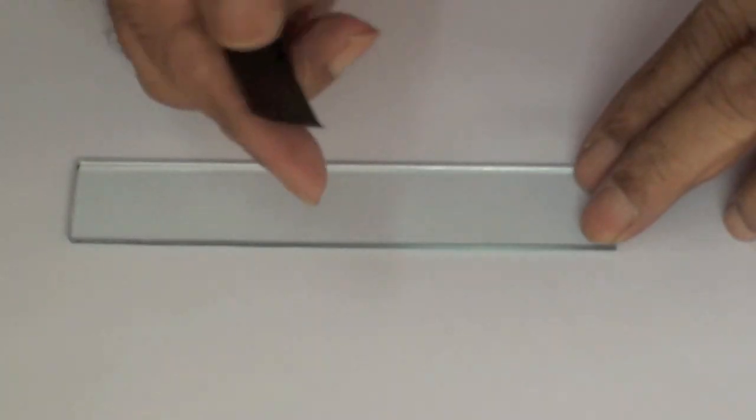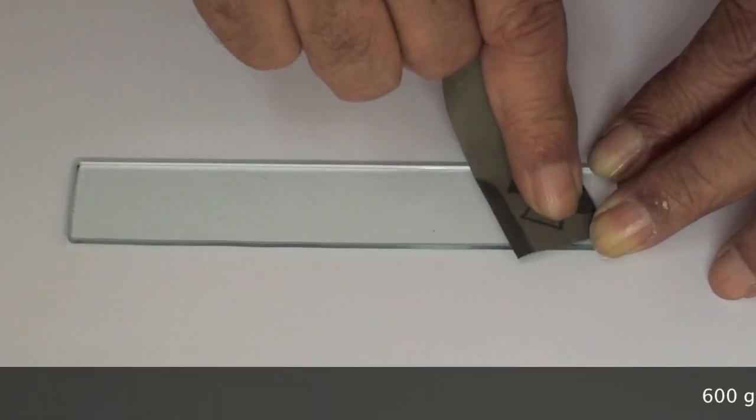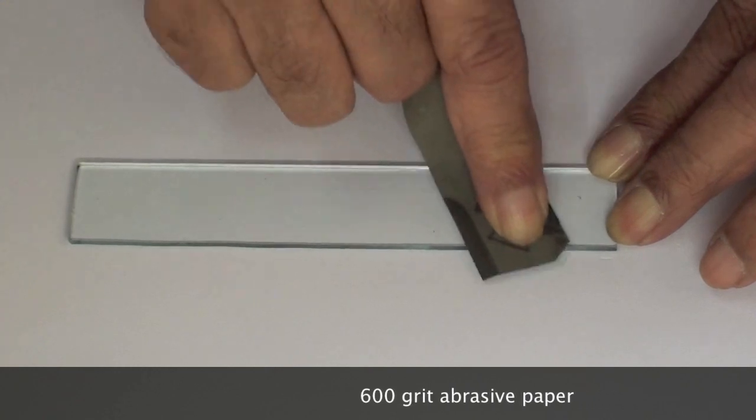Next, the surface is abraded with 600 grit abrasive paper to get a matte surface on the glass.